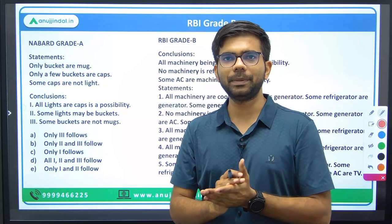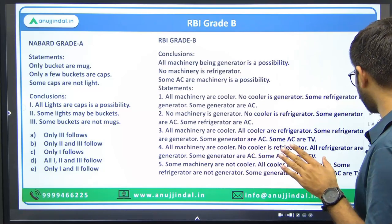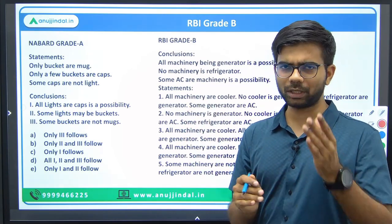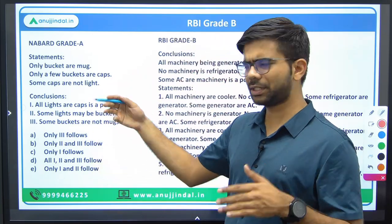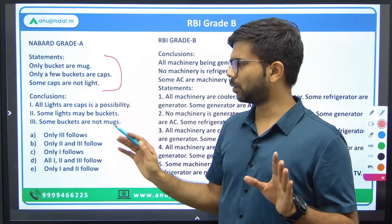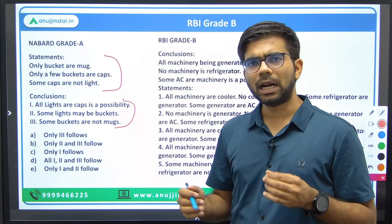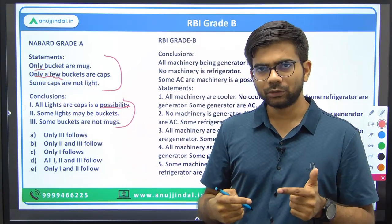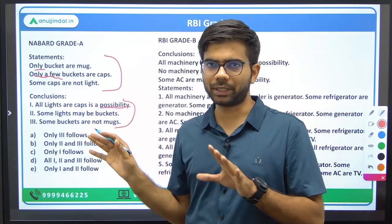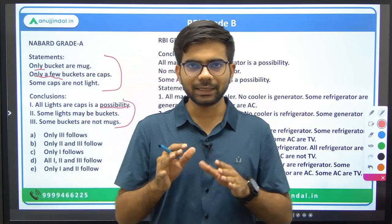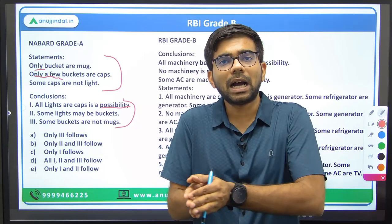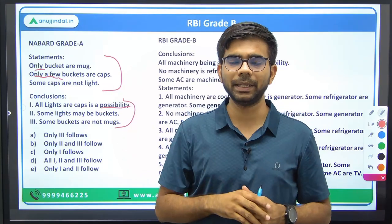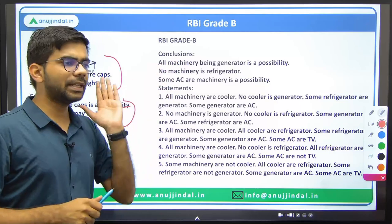Similarly, in Reasoning, NABARD's level is quite lower compared to RBI Grade B. Here I have taken a question from the topic of syllogism, which is a favourite topic of examiners and appears in almost all exams. In NABARD Grade exam, the syllogism question asked is quite straightforward — there are three statements and three conclusions, and these types of questions are generally what appear in NABARD. You can be confident you will clear it, but we have to practice depending on what type of questions are asked in previous years.